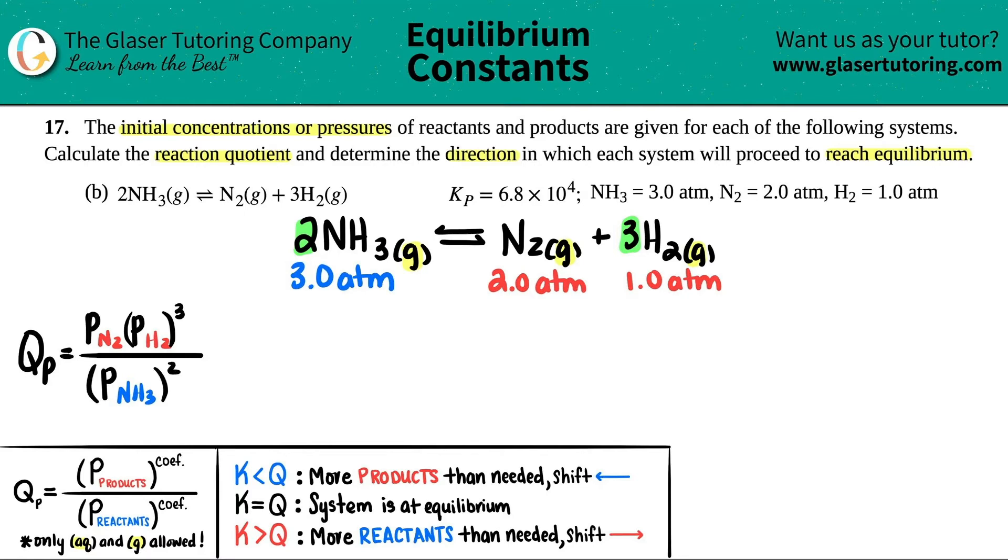Now we're ready to rock and roll. Let's actually put those numbers in. I got the pressure of N₂ which was 2.0 times the pressure of H₂ which was 1.0, but that one I have to raise to the third. But one raised to the third is just one. Then comes NH₃ on the bottom: 3.0, and that one is raised to the second. Let's get one number for the top, one number for the bottom.